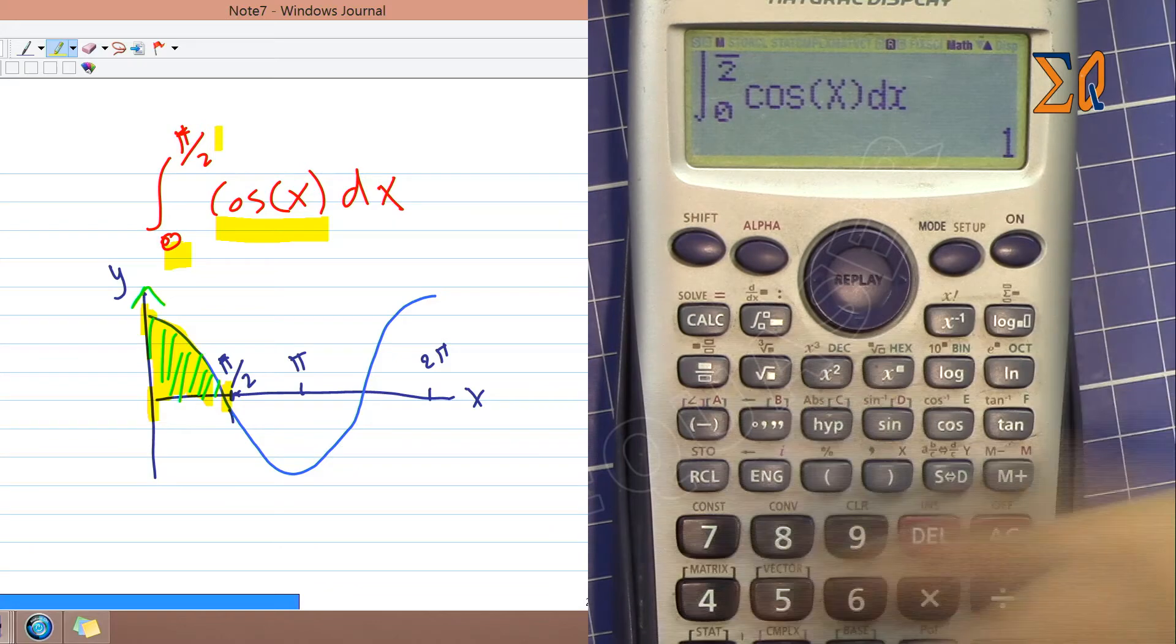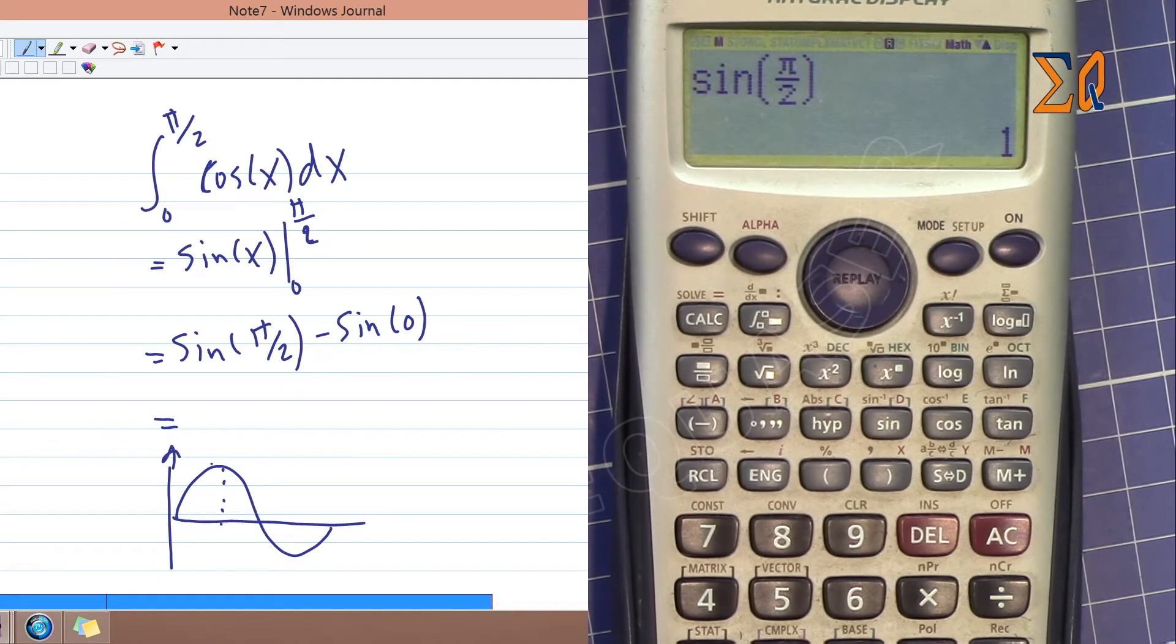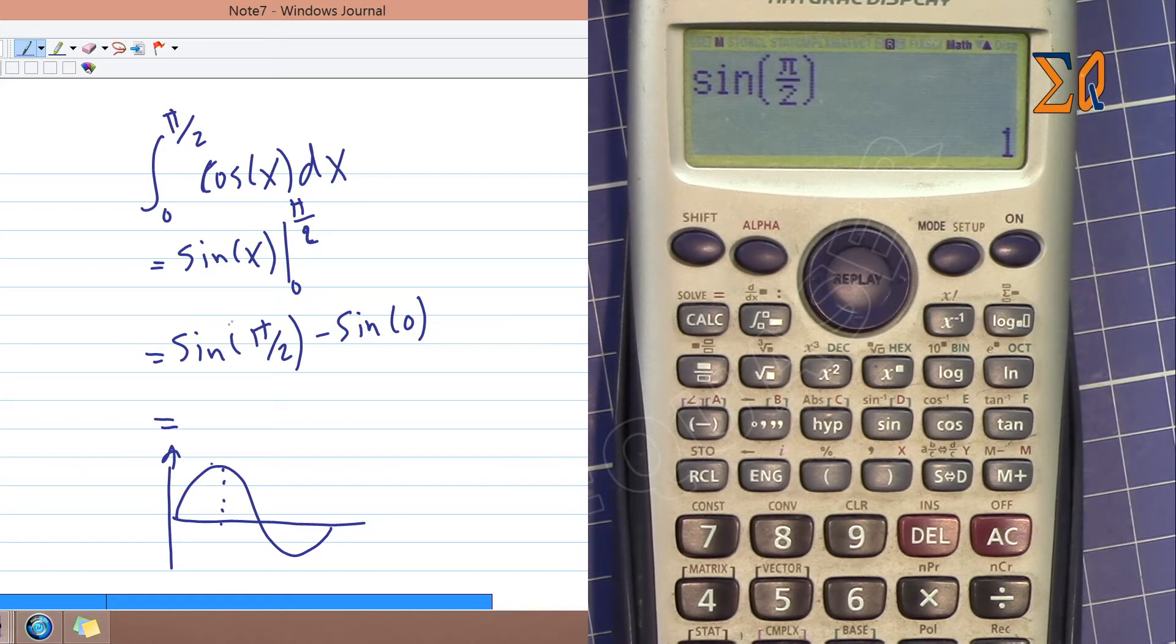Press equal sign. The value we got is 1. If we do this by hand, the integral of cosine is sine, evaluated from 0 to π/2. So we have sin(π/2) - sin(0). Sin(0) is 0, and sin(π/2) is 1, as you can see in the diagram. The answer is 1.